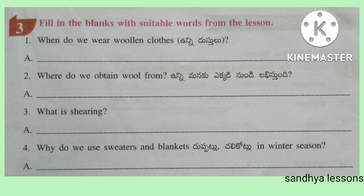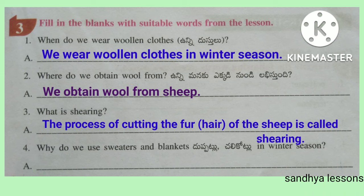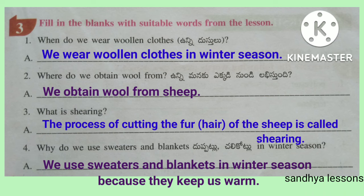Third, fill in the blanks with suitable words from the lesson. When do we wear woolen clothes? We wear woolen clothes in winter season. Where do we obtain wool from? We obtain wool from sheep. What is shearing? The process of cutting the fur of the sheep is called shearing. Why do we use sweaters and blankets in winter season? We use sweaters and blankets in winter season because they keep us warm.